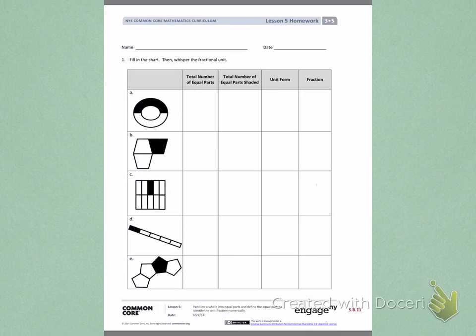I see a circle that has been divided equally into parts. When I look at those parts, I see that they have been divided equally into two equal parts. So my total number of equal parts is 2.